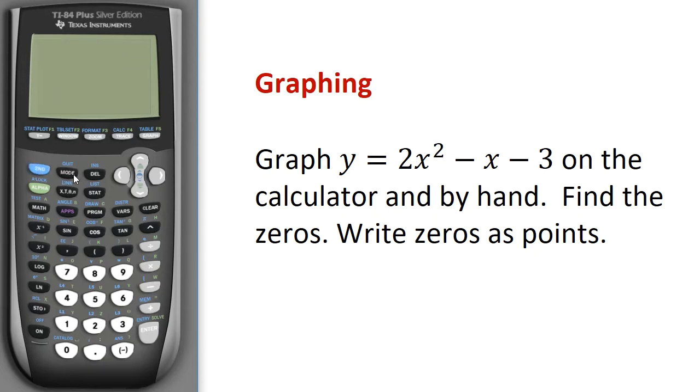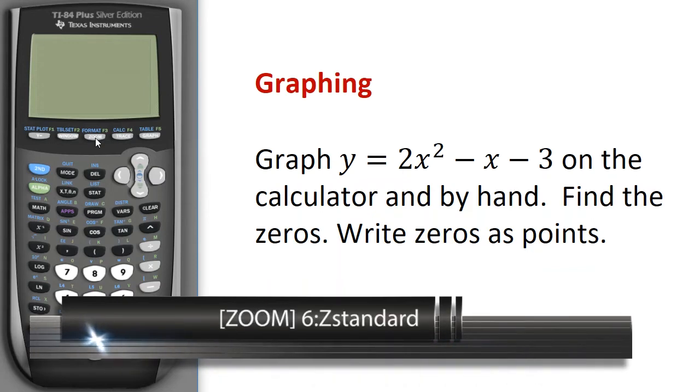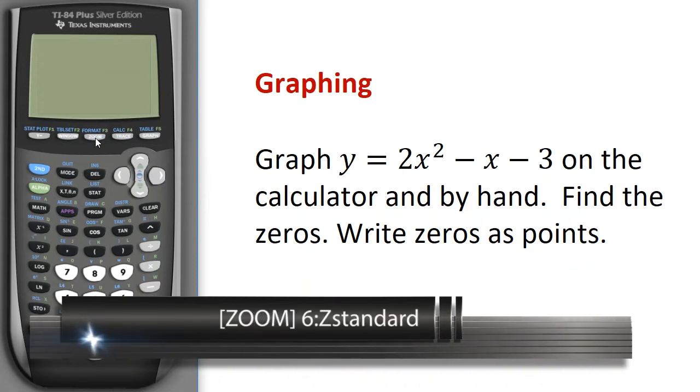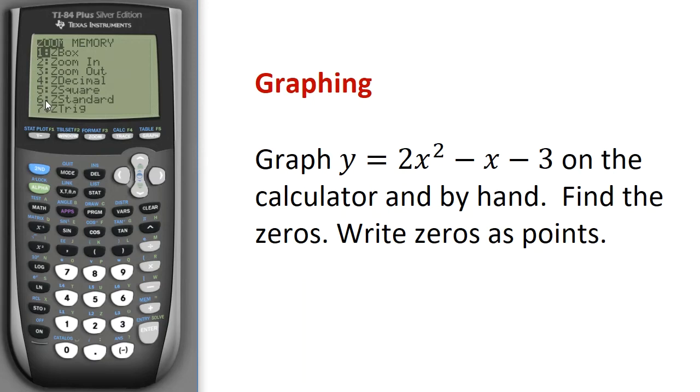Now in order to see the graph, there's a couple of different things I could do. I could choose to set up the window, or I could have it look at an automatic window, and the automatic window has x going from -10 to 10 with a tick mark every 1, y going from -10 to 10 with a tick mark every 1. So I'm going to start with that. We're going to go Zoom, and I'm going to select 6 here, and that will graph my parabola, and I can see that I have 2 points there.